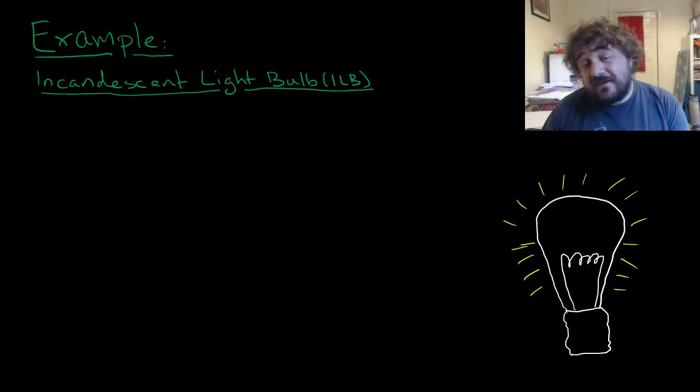Now we're going to look at an example of this, and a good example is the incandescent light bulb, which we'll write down as ILB. That's these ones which you don't see much of anymore. They've become less and less common.